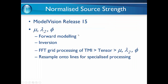In release 15 of Model Vision we compute the normalised source strength, the second eigenvalue, and the co-inclination — done in forward modelling. We can use it in inversion, and it's supported as an FFT grid processing where from the TMI we can directly derive these three parameters. They can also be resampled onto lines for specialised processing.